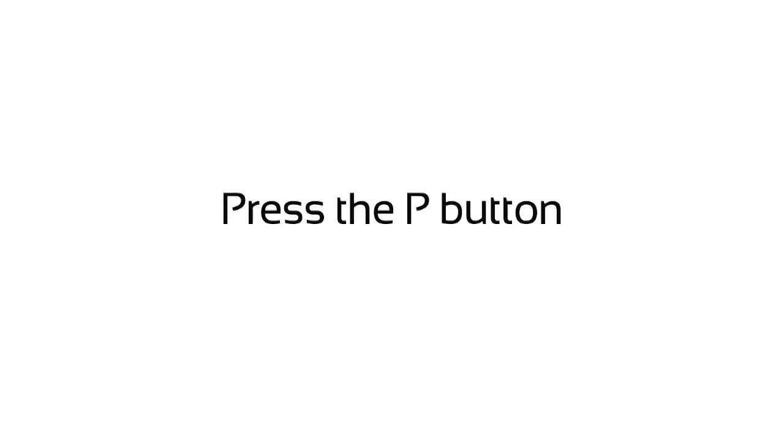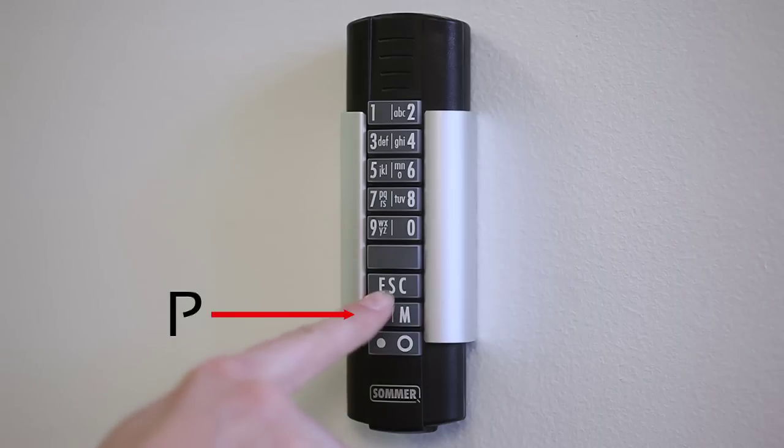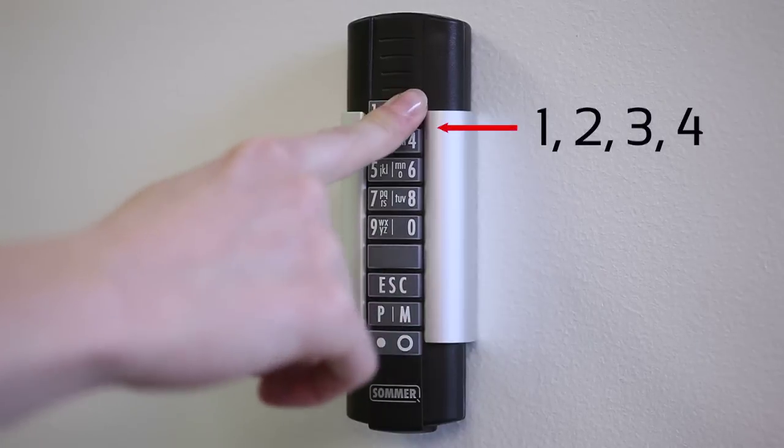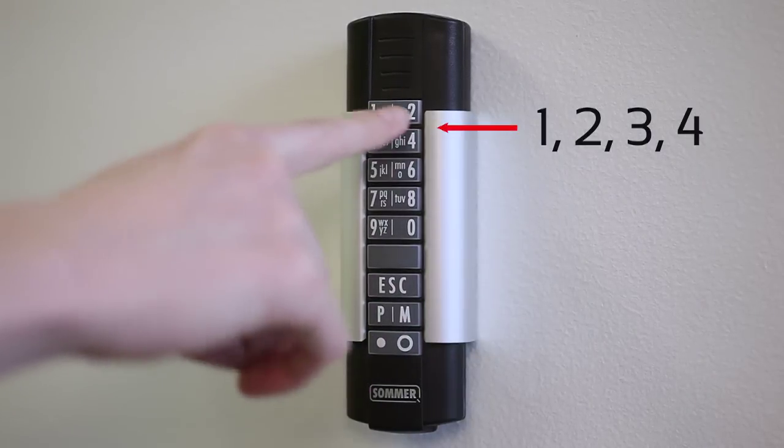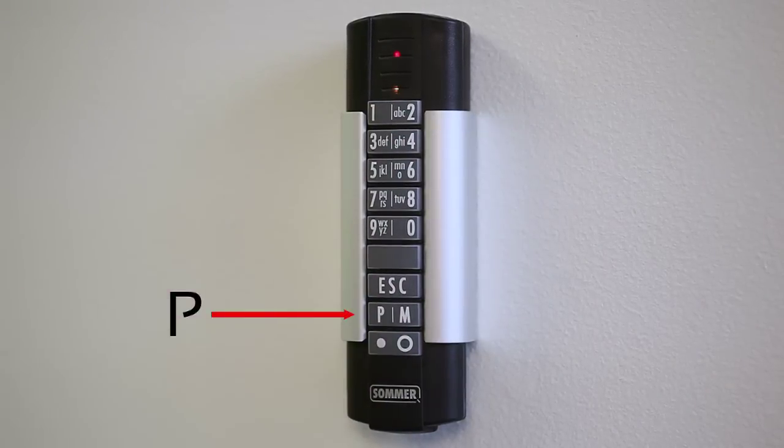Press P. Enter the entire access code: 1, 2, 3, and 4. Press P again to complete the programming.